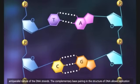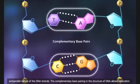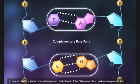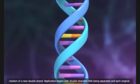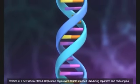The complementary base pairing in the structure of DNA allows replication to be executed in a semi-conservative manner. Each strand of the DNA molecule is used as a template in the creation of a new double strand.